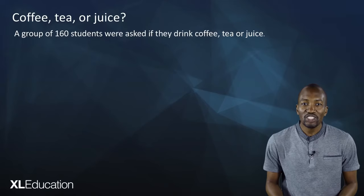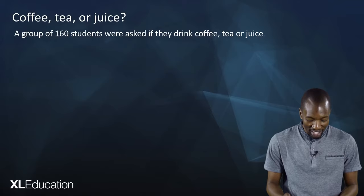You have learned about probabilities, different types of events, and their Venn diagrams. Now it's time to put all that into practice. Let's look at constructing Venn diagrams — let's look at the coffee, tea, or juice problem.